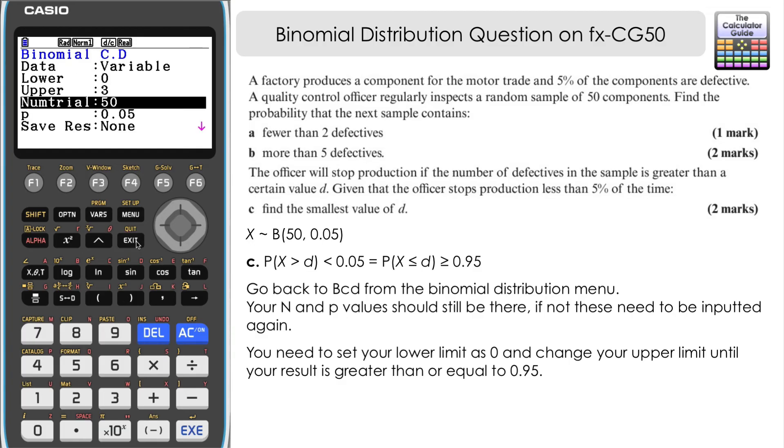So if we just press exit and go back, well, then we need to increase our upper limit then. So let's try it with four and just execute. And here we've got 0.896. That's nearly 90%, but not quite high enough.